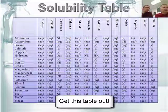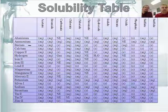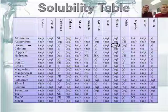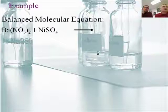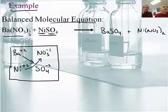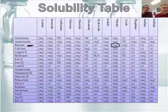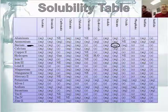Now let's go to states. I've got barium sulfate and nickel nitrate. We need to check the first one to see if they react. Barium nitrate is aqueous. Now nickel 2 sulfate — nickel isn't on our table, but I happen to know that it's aqueous.